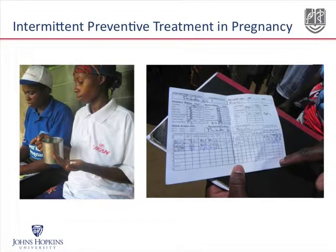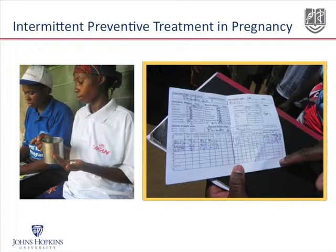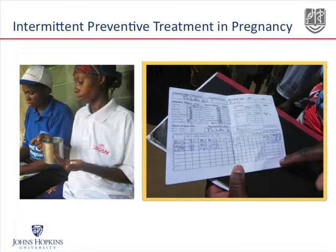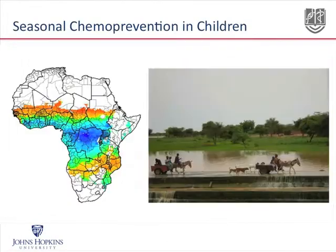When this is done, it's important, as you can see on the right, to record the dose that has been given and the date in the woman's take-home antenatal card or booklet, so that when she comes back the next time, people can verify whether she's due for another dose.